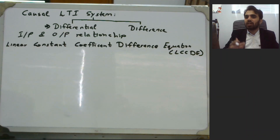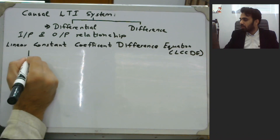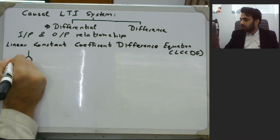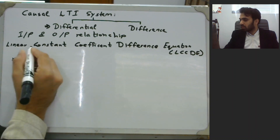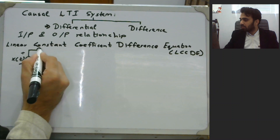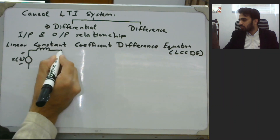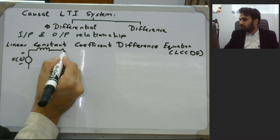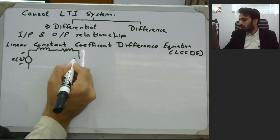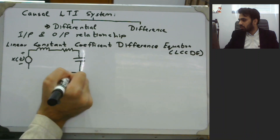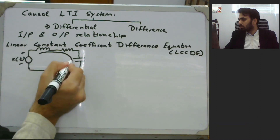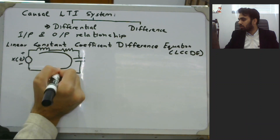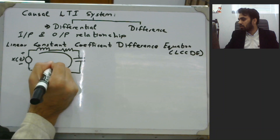Let us explain further with the help of one circuit. Say we have an input x(t), followed by an inductor, then a resistor, then a capacitor, and the circuit closes. The output is in terms of loop current, that is y(t).